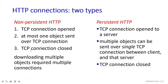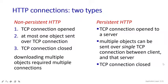In non-persistent HTTP, the TCP connection will get closed once all transmission of data is done. And downloading multiple objects requires multiple connections — if you want to transfer, upload, or download any objects again, you need to give multiple connections. But in persistent, once the TCP connection is closed, you don't need to reconnect because multiple objects have already been sent using the single TCP.